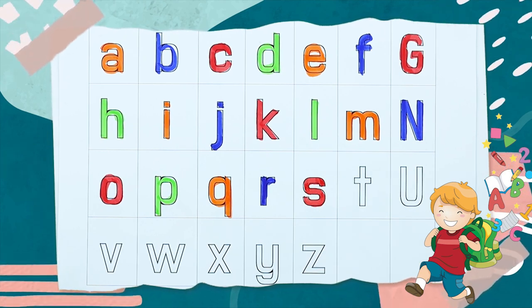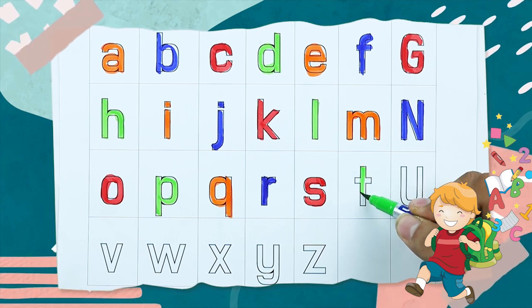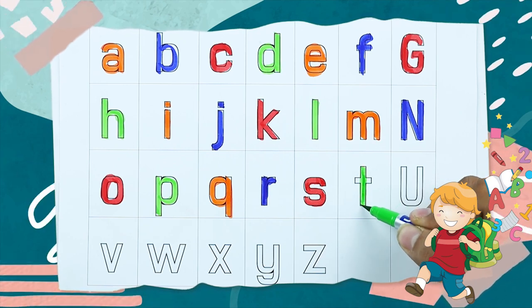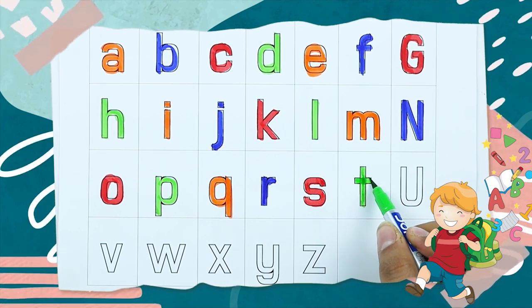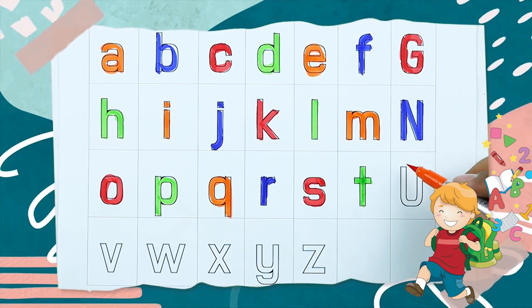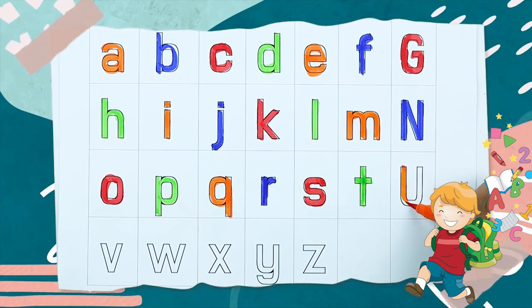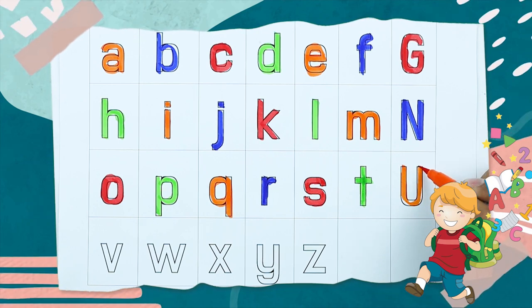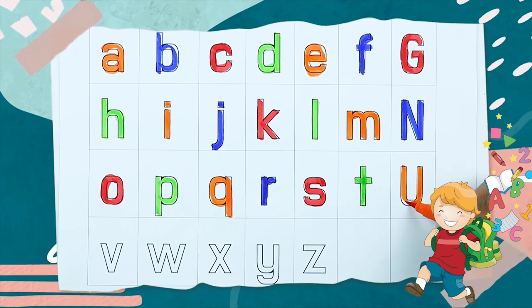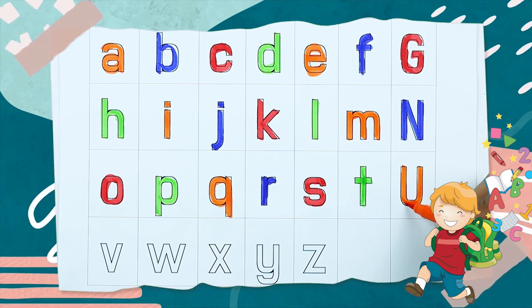Small t, T for tiger, it's small t with green color. U, U for umbrella, yes, U with orange color.